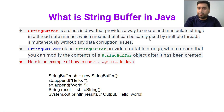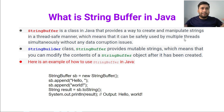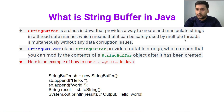Thread-safe means you have one resource and we are giving permission to access this resource one by one — not allowing multiple people to access the same resource at the same time. We are restricting the resource to be accessed one at a time. Which means it can be safely used by multiple threads simultaneously without any data corruption issue. Multiple threads means when I cover the thread topic I will explain how we can create and use multiple threads.